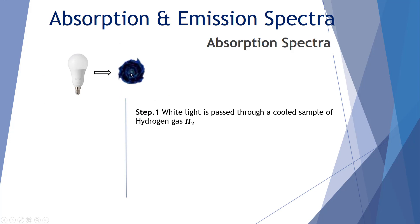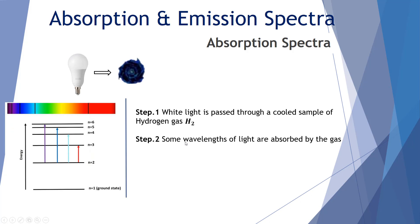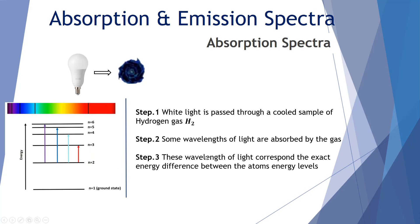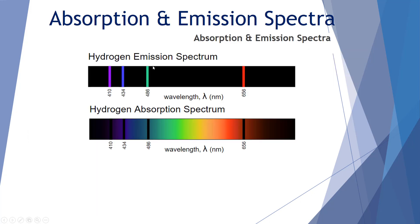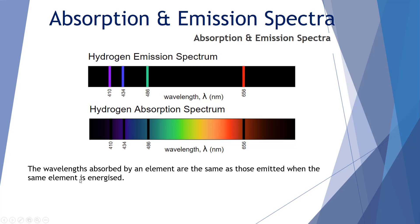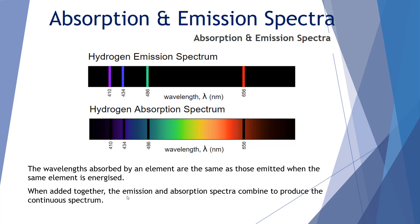For absorption spectra, white light is passed through a cooled sample of hydrogen gas. Some wavelengths of light are absorbed by the gas — if the wavelength matches one of the energy transitions, a photon is absorbed and the electron is promoted to a higher level. These wavelengths correspond to the exact energy difference between the atom's energy levels. The light is then separated via a grid or prism, and you see all wavelengths present except those that have been absorbed. The wavelengths absorbed by an element are the same as those emitted when the element is energized; combining the emission and absorption spectra produces the continuous spectrum.